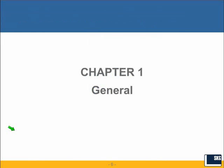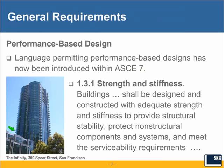What we're going to be doing today is going through each chapter in ASCE 7-10 and highlighting any major changes. We'll start with Chapter 1. The first change in Chapter 1 is a new provision that specifically allows performance-based design to be used — something not specifically addressed in the code in the past. You'll find the provisions for performance-based design in Section 1.3.